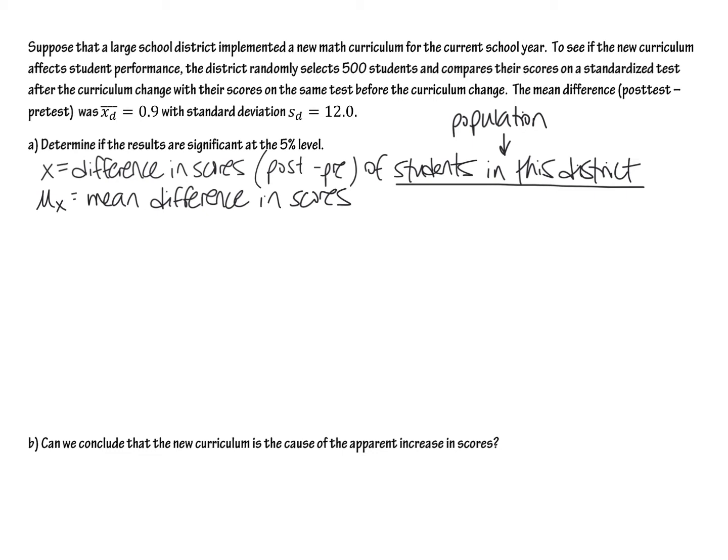When you're defining what your x is, if you make it really clear what the population is within your definition of x, you don't have to state, again, what the population is. Just make it really clear in here. Unless the question specifically asks define the population, then just make sure that it's very clear in your definition of x. And the mu of x, since we already defined x here, this is the same x. It's the same variable. It's the mean difference in scores. Make sure you always point out the direction that you're subtracting, post-test minus pre-test.